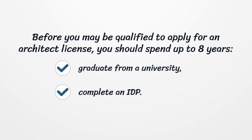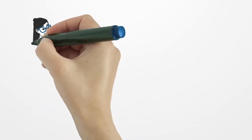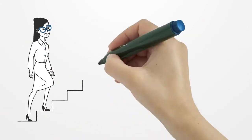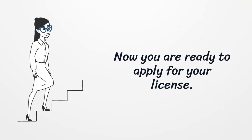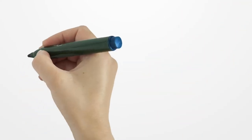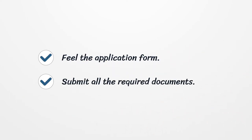Before you may be qualified to apply for an architect license, you should spend up to 8 years. Graduate from a university and complete an IDP. Now you are ready to apply for your license. Fill out the application form and submit all the required documents.